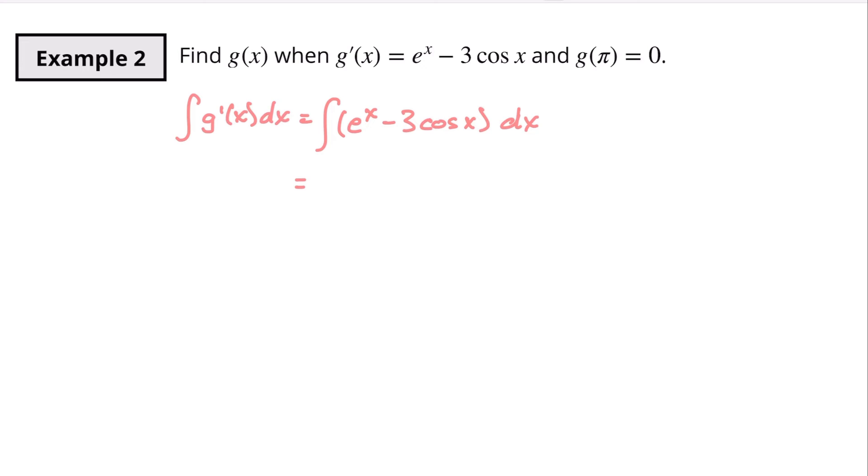So the integral of e to the x is e to the x. The integral of negative three cosine x, well we're going to continue to hold onto that negative three and the integral of cosine x is sine x. And then we're going to add a c onto the end of that. And that is going to be what we call g of x.